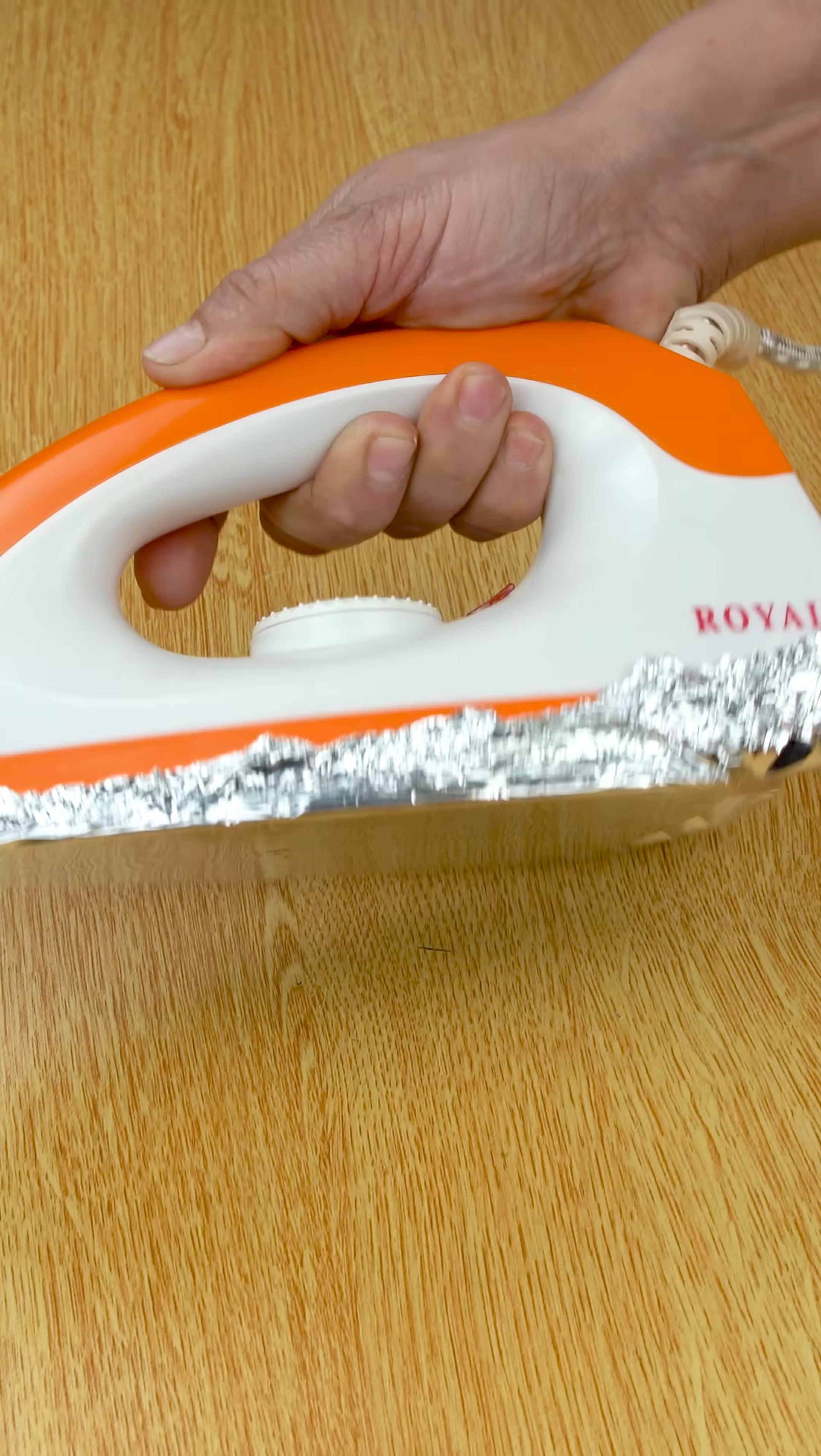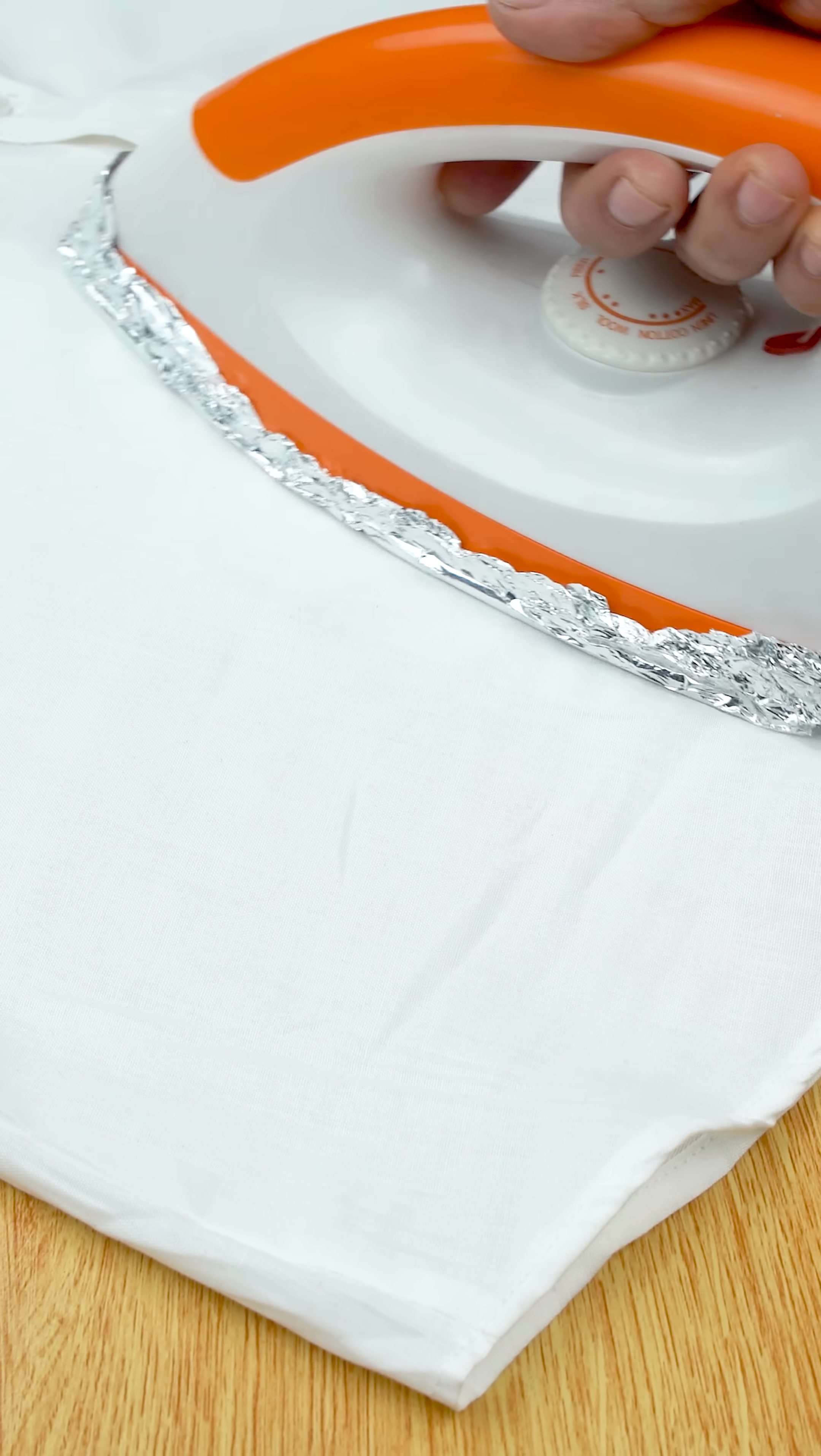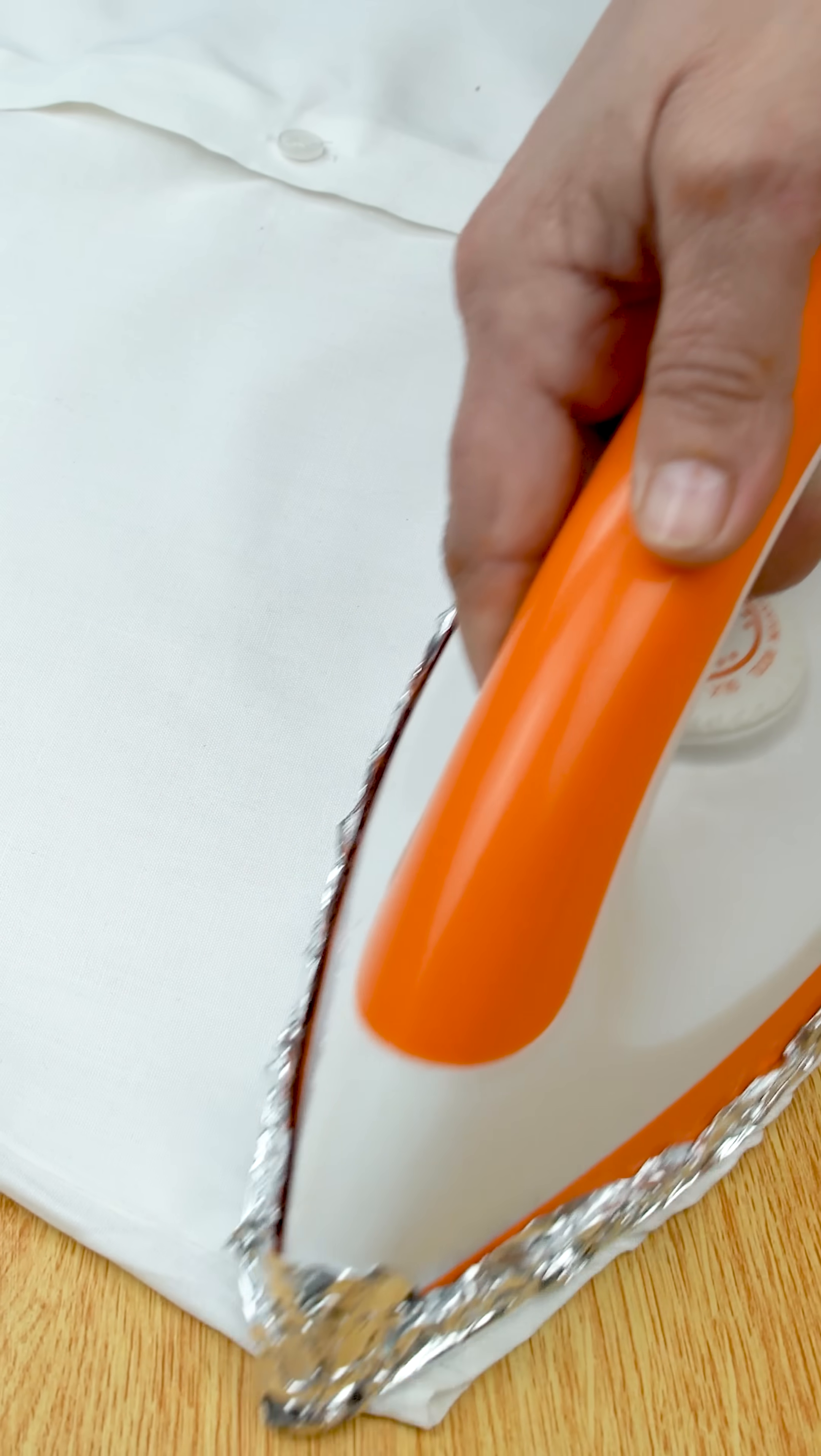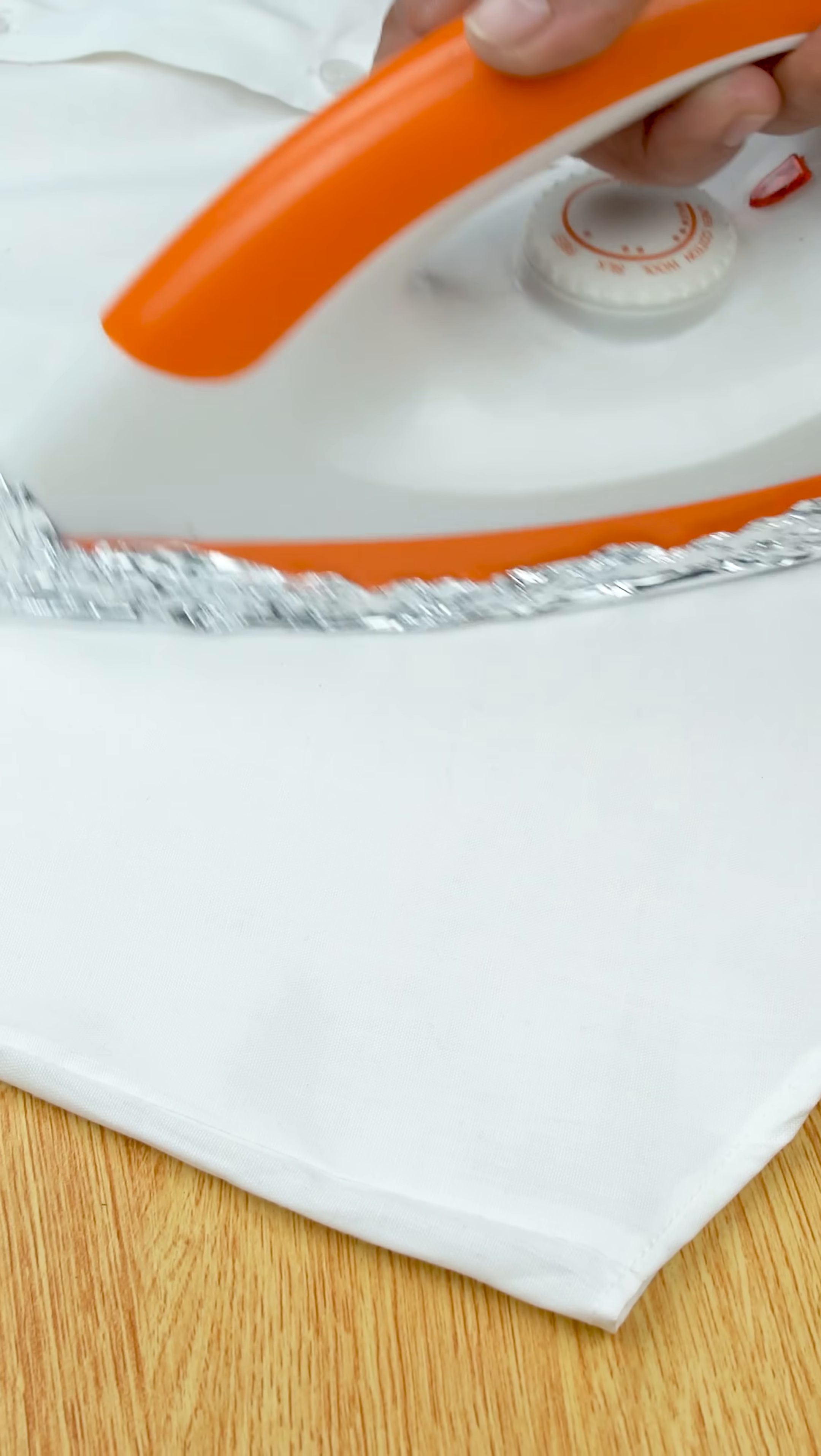Now, get ready to use it. Place the garment you need to iron on the ironing board and put the aluminum foil directly underneath the fabric. That's it. Now run the iron over the fabric as you normally would.